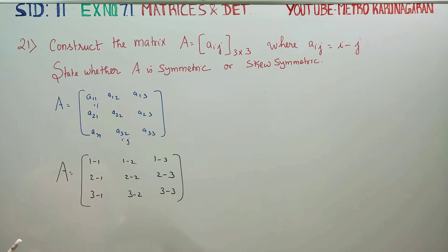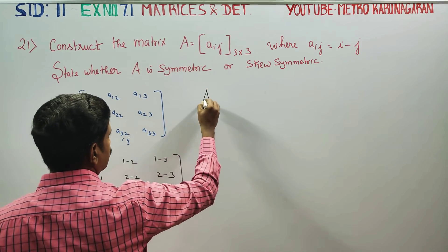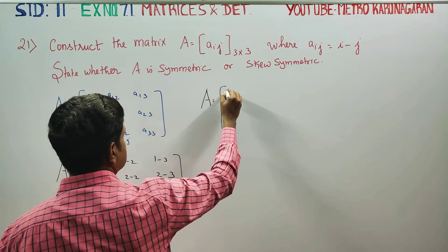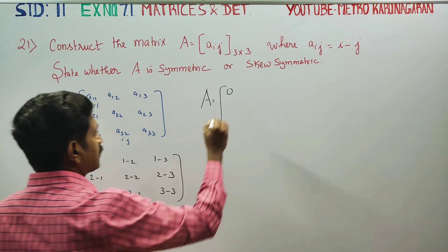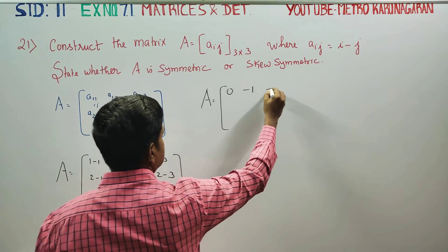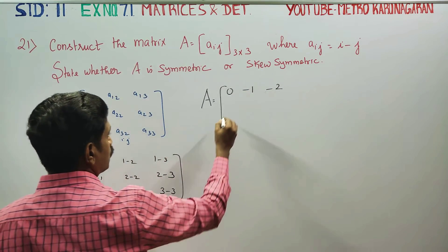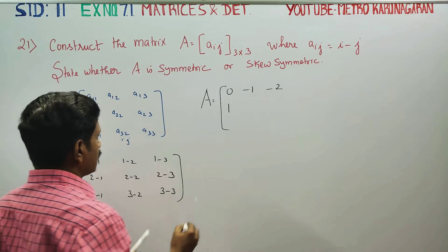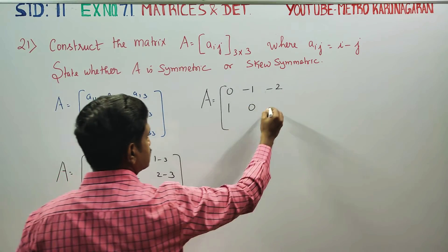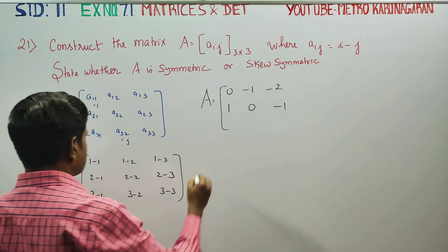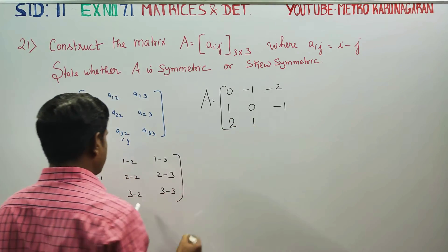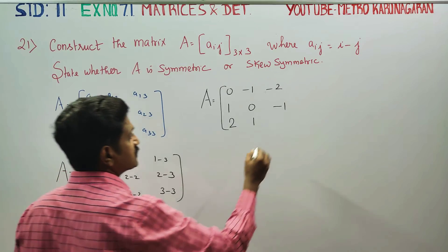Computing the elements directly, A is equal to: 1-1 is 0, 1-2 is minus 1, 1-3 is minus 2, 2-1 is 1, 2-2 is 0, 2-3 is minus 1, 3-1 is 2, 3-2 is 1, 3-3 is 0.